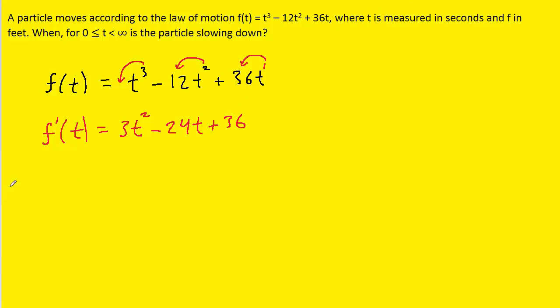We also need an acceleration function, so we're going to calculate the second derivative. Again, simple power rules, so we'll have 6t minus 24, and then the derivative of this constant is 0.